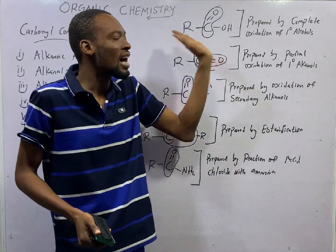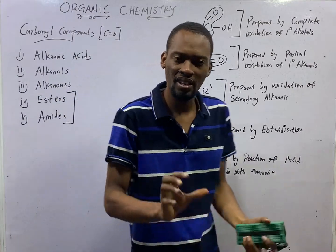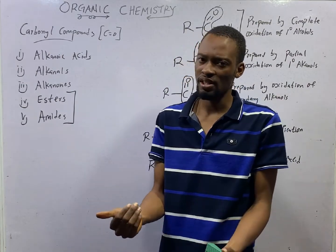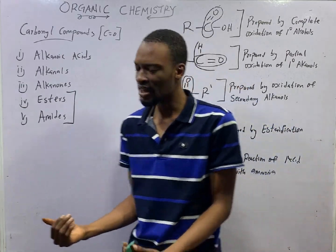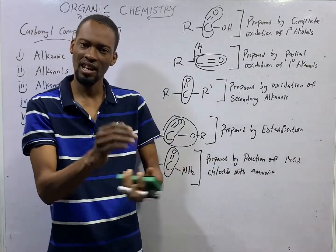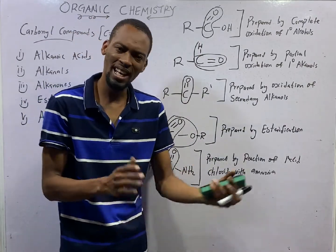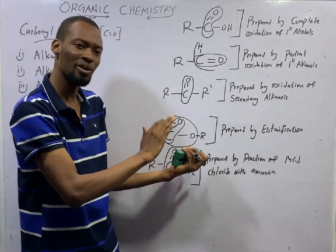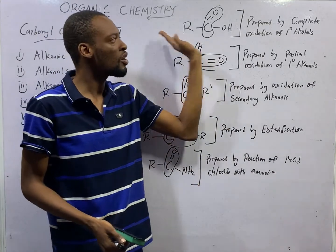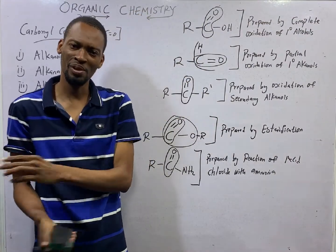Alkanoic acids can be prepared by complete oxidation of primary alkanols. Also, they can be prepared by hydrolysis. Remember, I said that when alkanols react with alkanoic acid, we form esters and water. Therefore, since the reaction is reversible, when esters and water react, we form alkanols and alkanoic acid. So, alkanoic acid can be formed via that method or by complete oxidation of primary alkanols like I gave you in the previous episode.